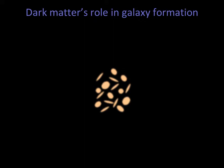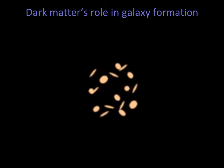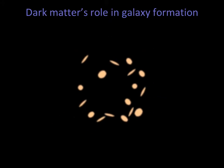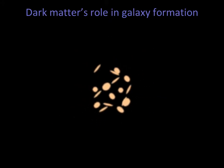The formation of clusters of galaxies is likely to be similar to that of the formation of individual galaxies. Early on, all the galaxies that will eventually make up a cluster are flying apart with the expansion of the universe. But the gravity of the dark matter associated with the cluster eventually reverses the trajectories of these galaxies.